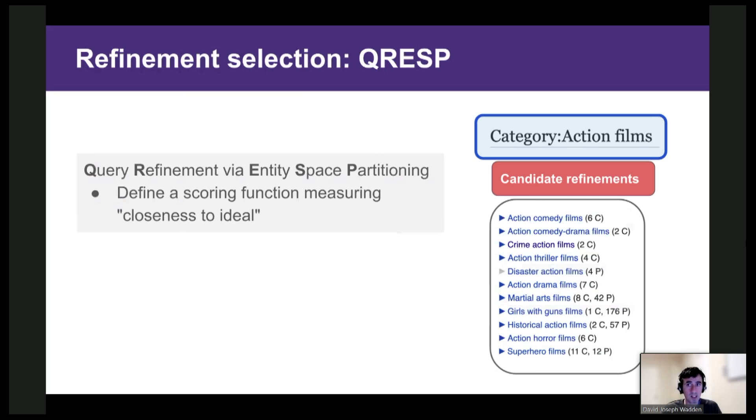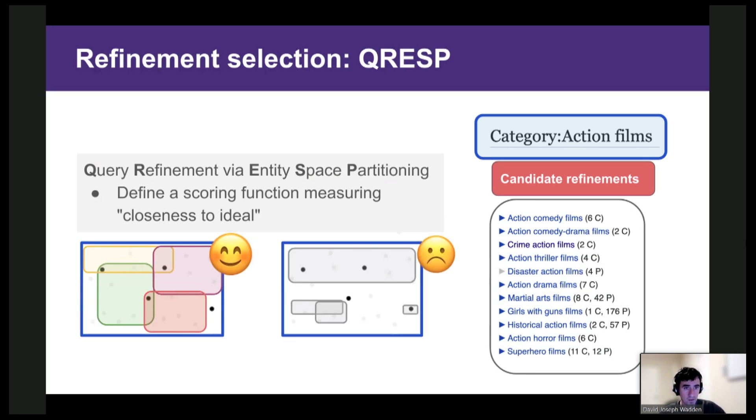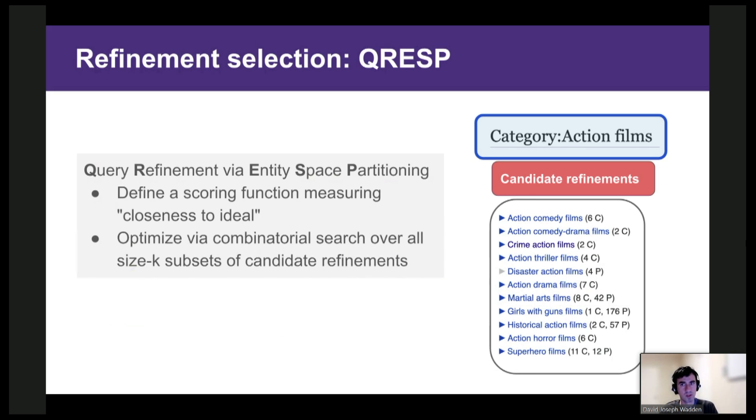To select the k best subcategories, we propose a technique called query refinement via entity space partitioning, or QRESP, which works as follows. First, we define a scoring function measuring closeness to ideal. So I'm going to skip the math, but the idea is that this refinement set is good and this one is bad. Then we optimize our scoring function by performing a combinatorial search over all set size k subsets of candidate refinements. And we make this tractable by converting the problem to an integer linear program, which we can optimize using general purpose solvers.